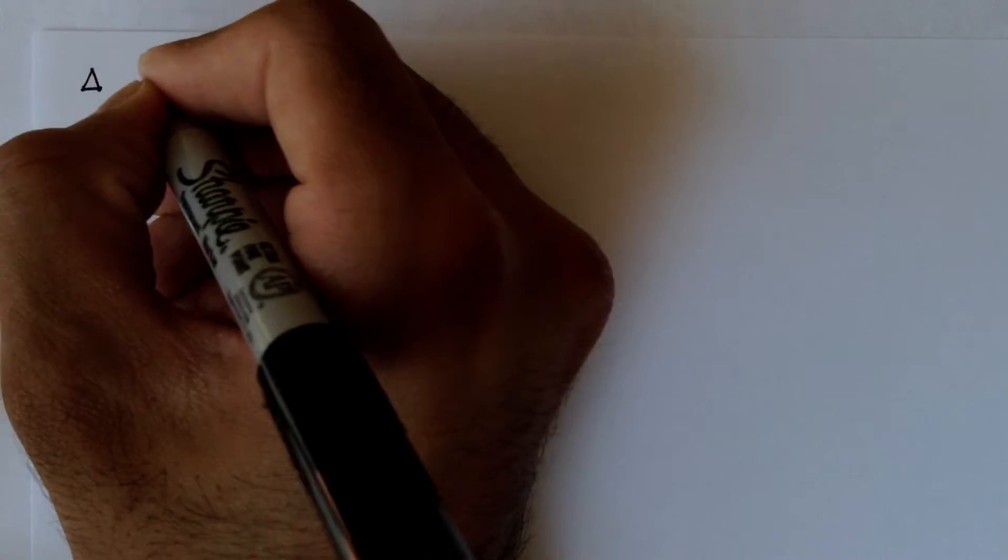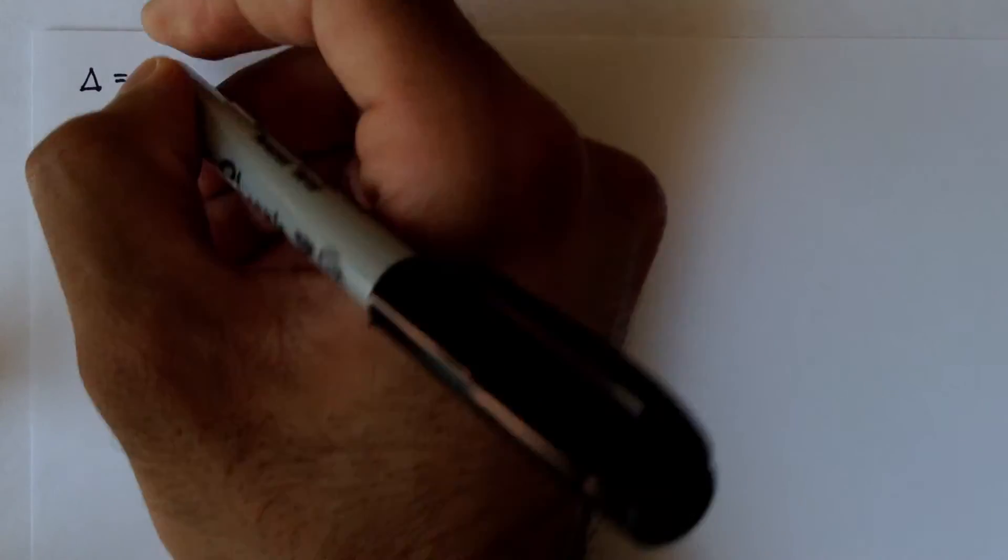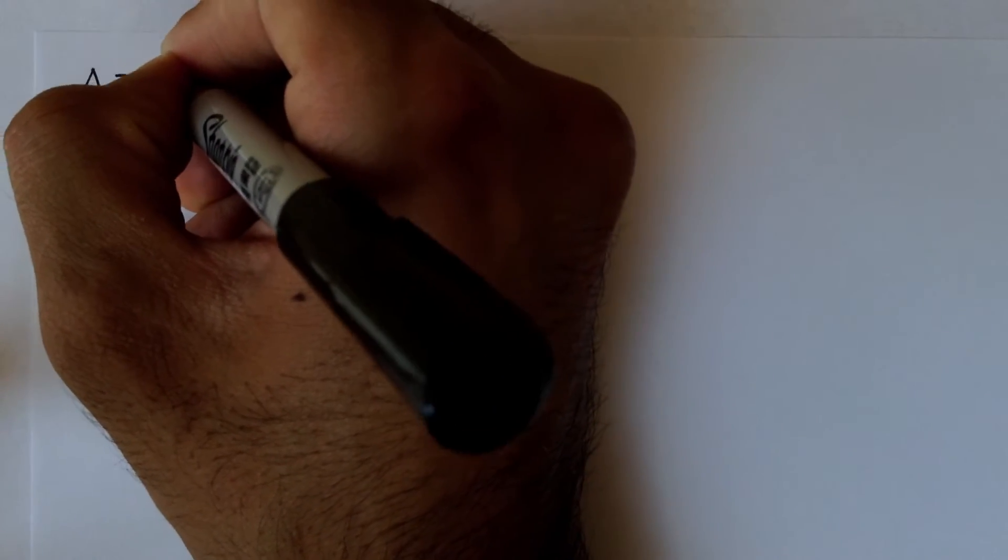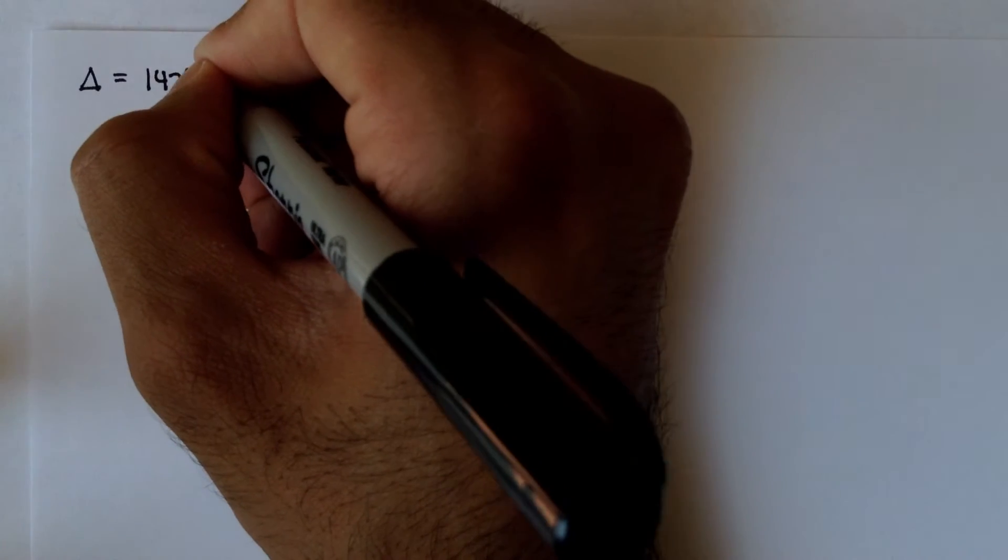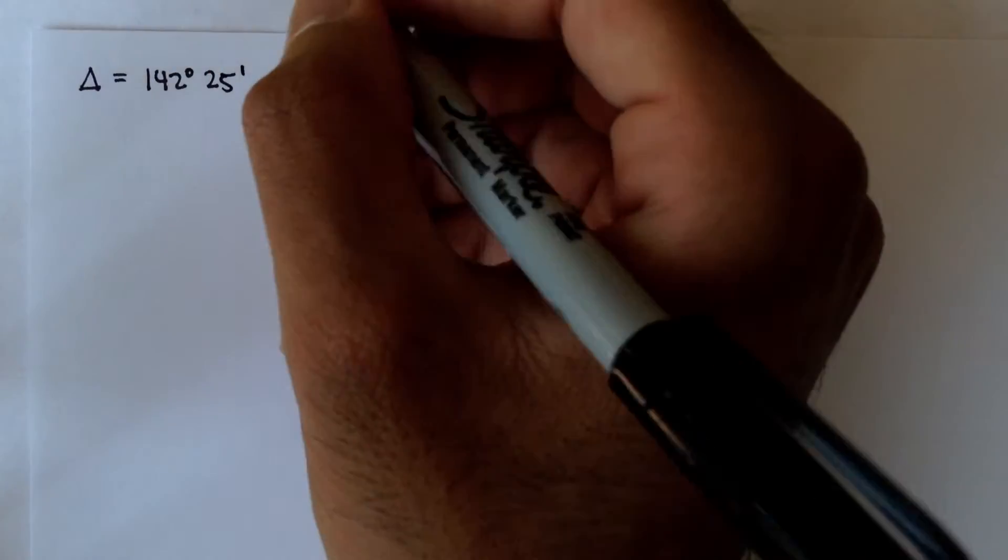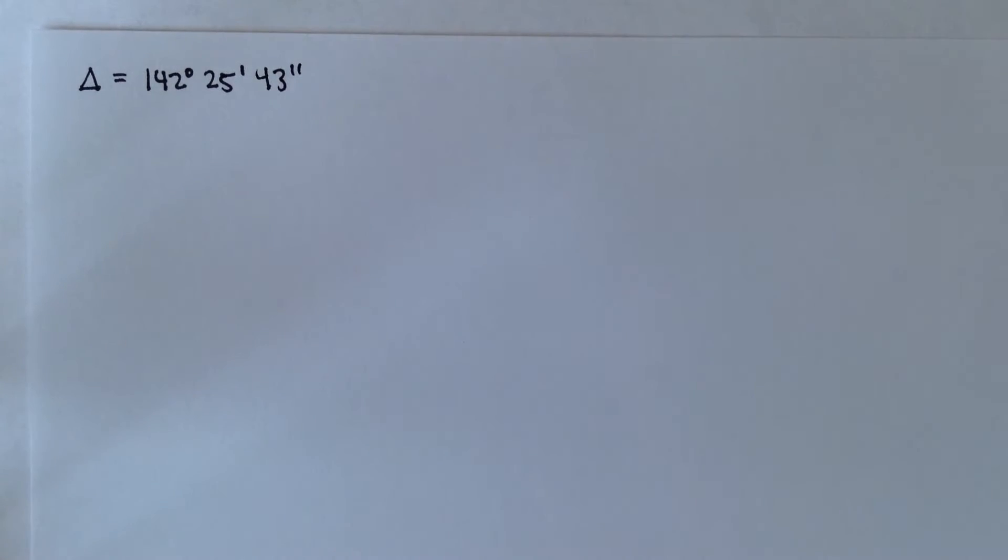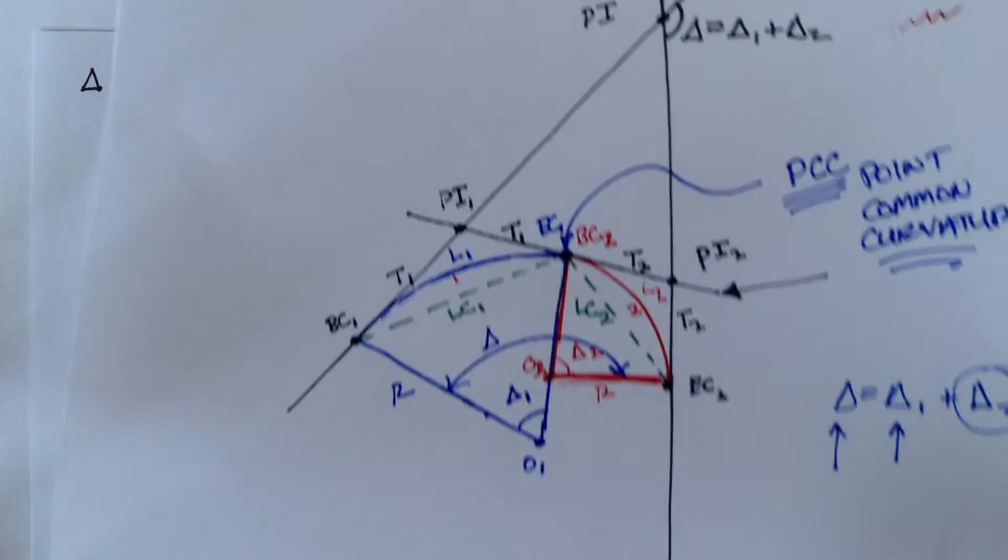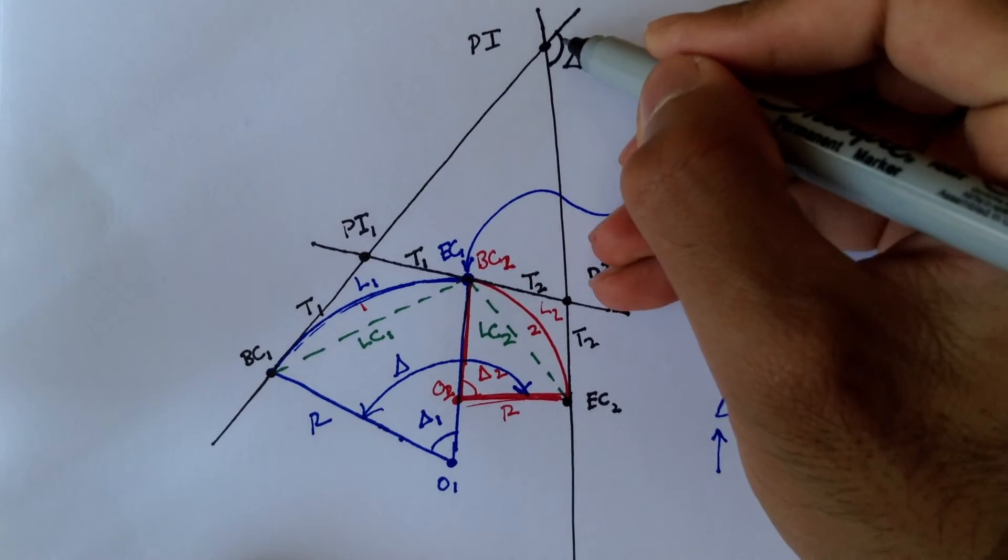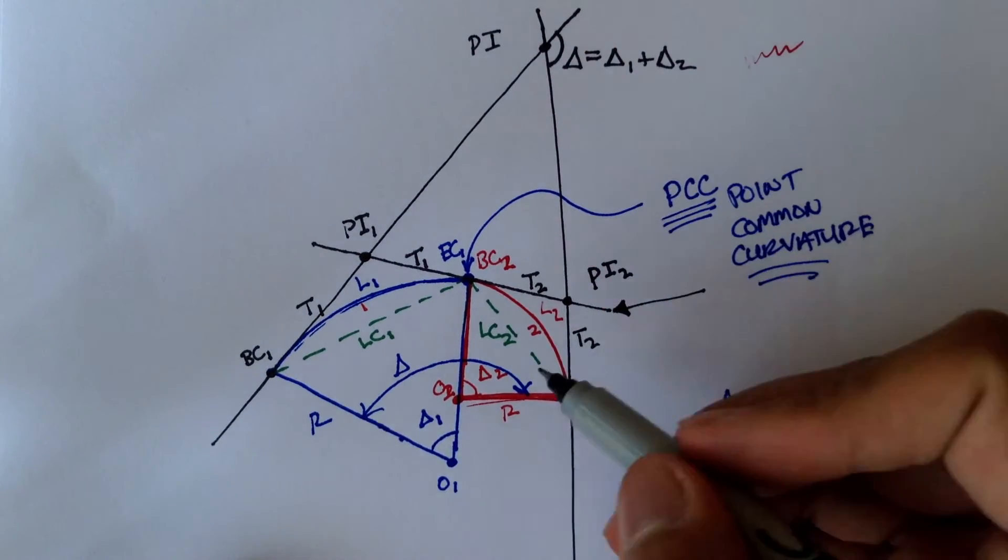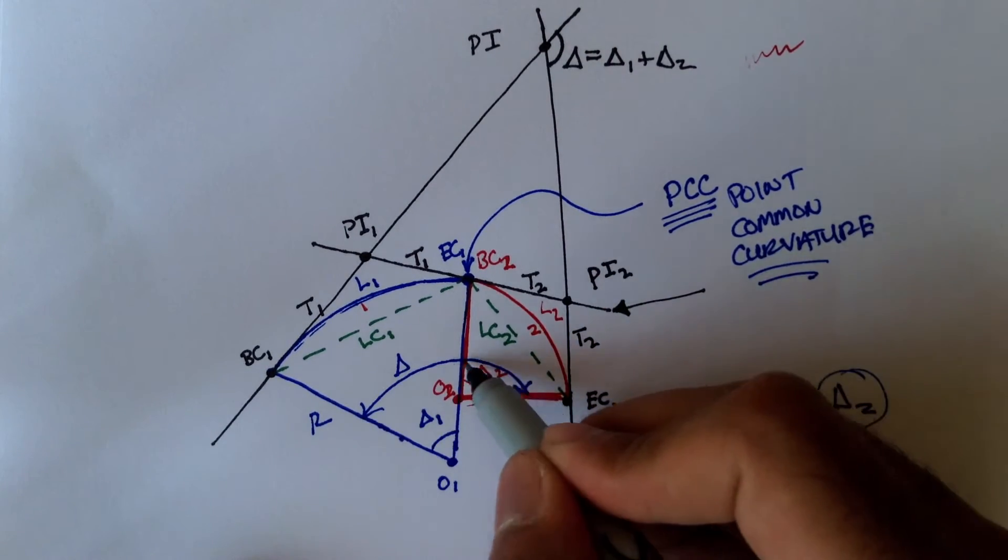Before we begin, we have some given values. First, our total interior angle is 142 degrees, 25 minutes, and 43 seconds. So that's the total interior angle, and on this diagram that is this angle right here, or this entire angle here.